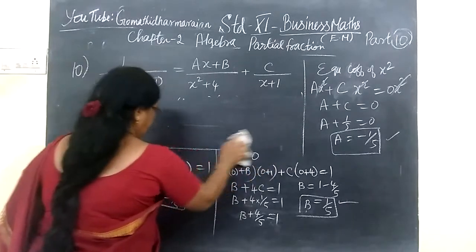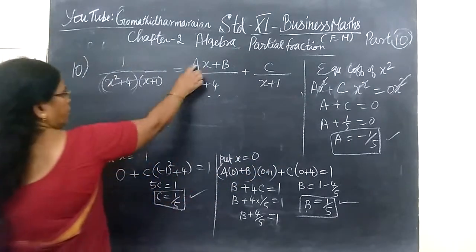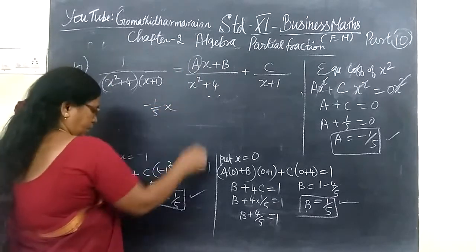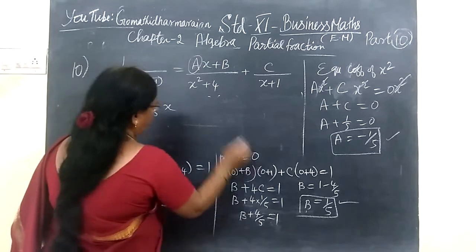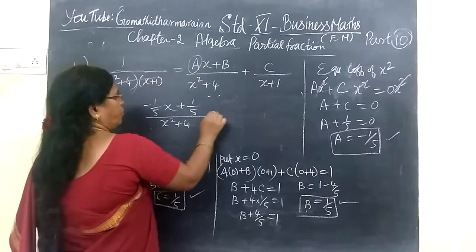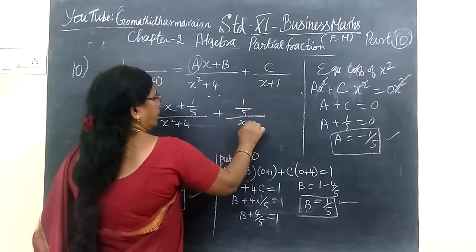So you are substituting A, B, and C. So for A you are writing minus 1 by 5 here, then for B, 1 by 5 here, 1 by 5 by x² plus 4. Then for C also 1 by 5 times x plus 1.